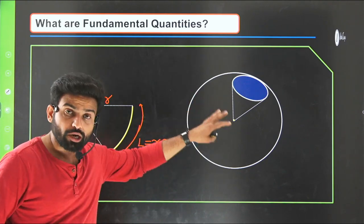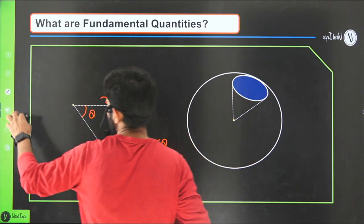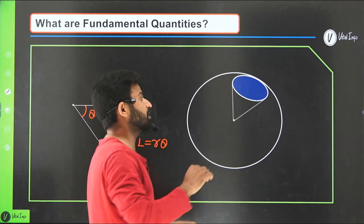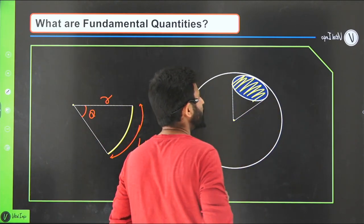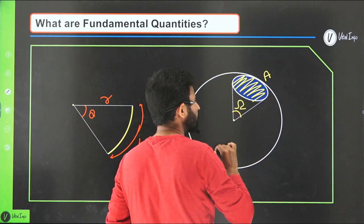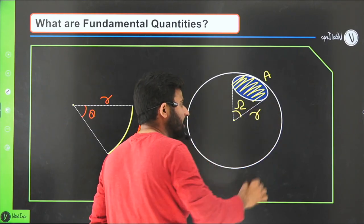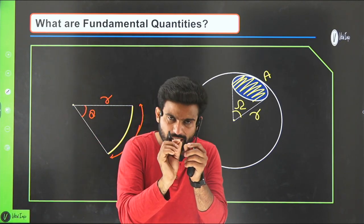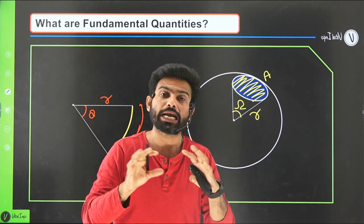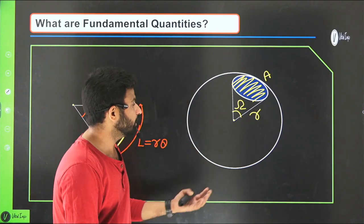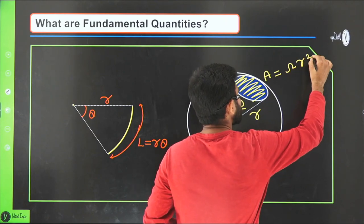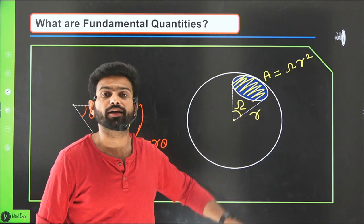For the solid angle, the area subtended by the solid angle is given by area equals omega times R squared, where omega is the solid angle and R is the radius of the sphere. This is a part of a sphere. For example, if you place a bulb inside a sphere, the light spreads spherically, and the area subtended by the solid angle is measured this way. The angle inscribed by a surface at a point is called the solid angle.